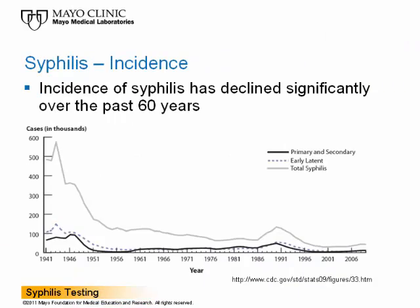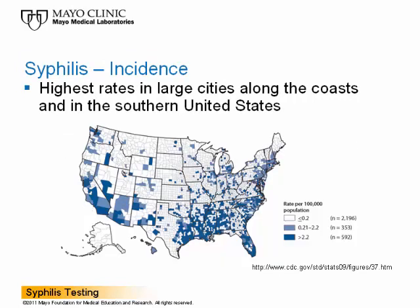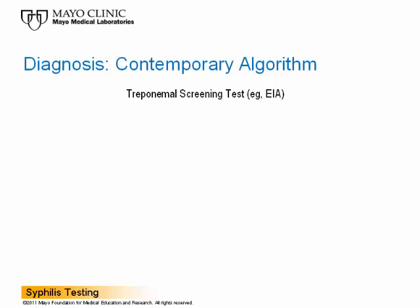The incidence of disease is of particular importance when selecting an assay or testing algorithm, as the positive predictive value of a laboratory method is impacted by how prevalent the disease is in the population. The incidence of syphilis has declined significantly over the past 60 years, with the highest rates occurring in large cities along the east and west coasts, and in the southern portion of the United States. Because of the limitations of the traditional testing algorithm and the fact that the overall rate of syphilis nationwide is low, many clinical labs have adopted a reverse algorithm for syphilis serologic testing.